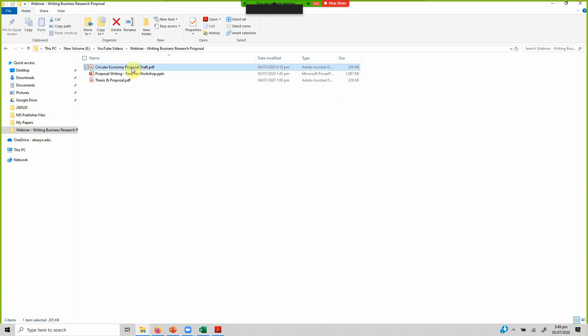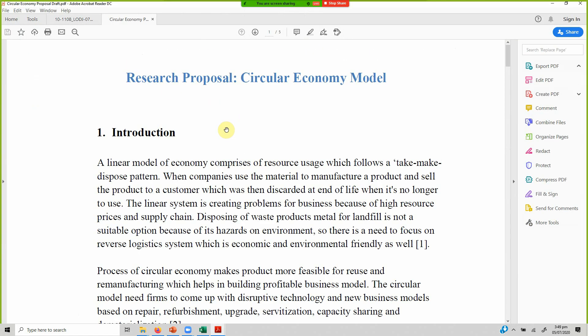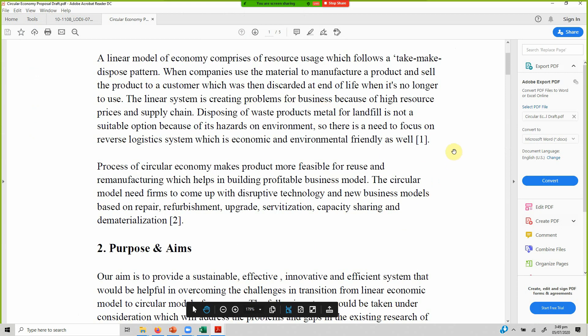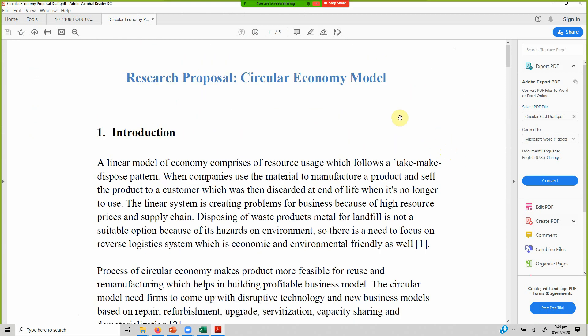To give you an example of a research proposal. I got this proposal. I was working with a professor in Spain. He asked me would I be a co-supervisor for this particular proposal and he sent me this proposal for review. Now have a look at this proposal. This is not to demean or degrade anyone because there is no name. Look at this proposal. This is how the proposal was sent to him. There is no title page. And circular economy model. This title does not tell you anything about the research.